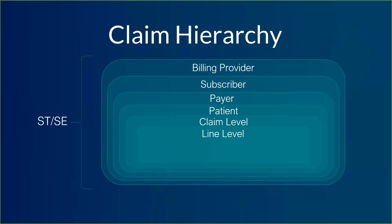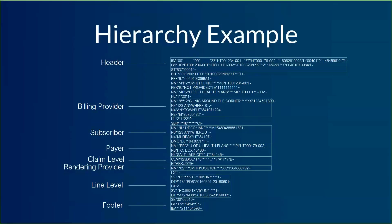The payload takes a general progression from upper levels down to lower levels. The upper levels are less specific — more identifying. The lower levels are more specific. So we've got billing providers, subscribers at the top — just identifying who we're talking about. Then we've got payer, patient, starting to get more specific. And then we get down into claim and line level detail. Everything is encapsulated by the header and footer, and everything goes from more general at the top to more specific further down.